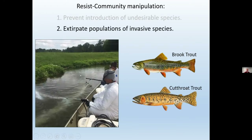If the species has become established, we might take an approach of extirpating that invasive species. A good example involves brook trout as an invasive species in the western U.S., where we're often trying to protect native cutthroat populations. One approach is to poison out particular water bodies using rotenone — removing the desirable species first, putting them somewhere safe, poisoning out the undesirable species, and then restocking later. This is typically very labor intensive and expensive.